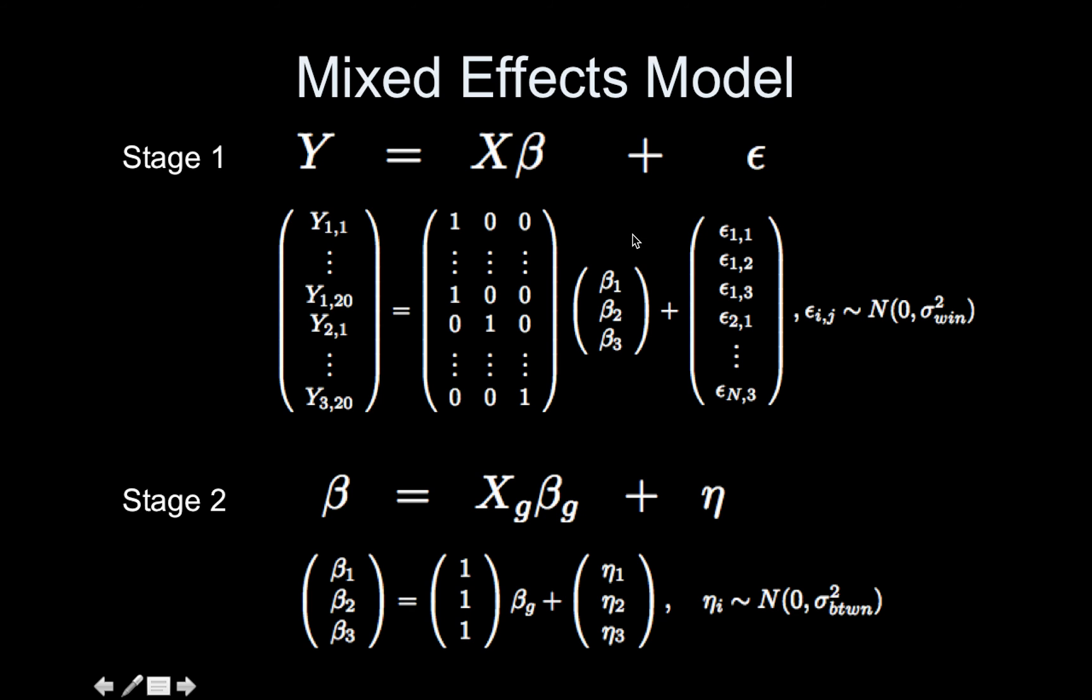Now you might notice we have a beta in two places, beta here and beta here. So let's just do a little algebra. That's the random effect by the way. Let's do a little algebra and just plug stage 2 into stage 1.